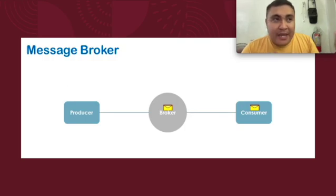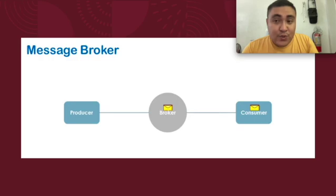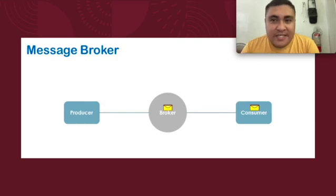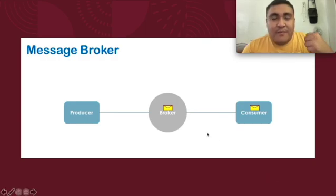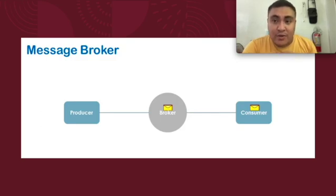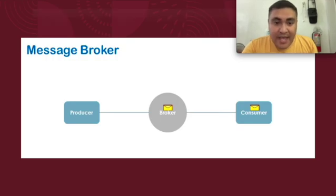The benefit of the message broker is that the receiving end does not need to be available at the time the producer sends a request or data. If the consumer is not yet online, the broker acts as the temporary receiving end and delivers the data once the consumer is available. For example, if I send data about a student profile and the destination office is not yet available, the broker saves it temporarily and sends it when the destination comes online. This concept is called asynchronous.